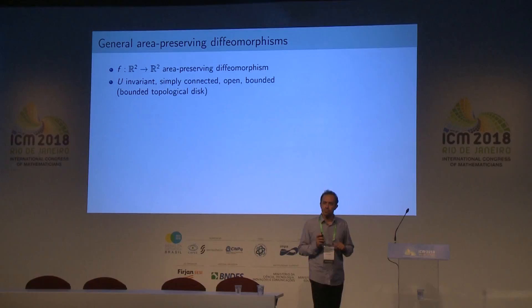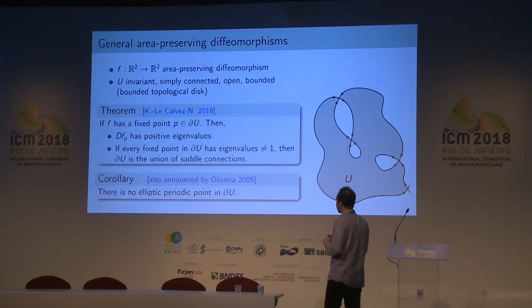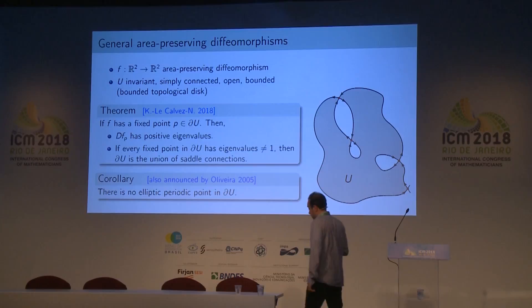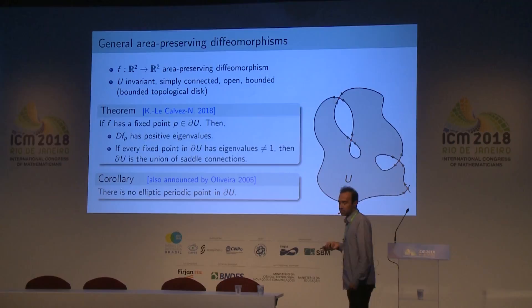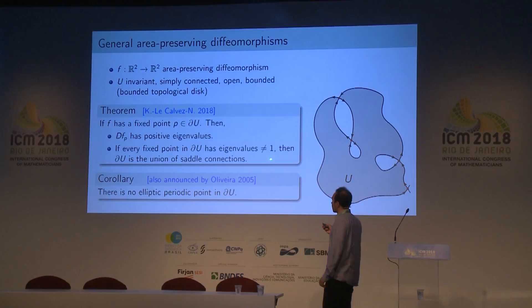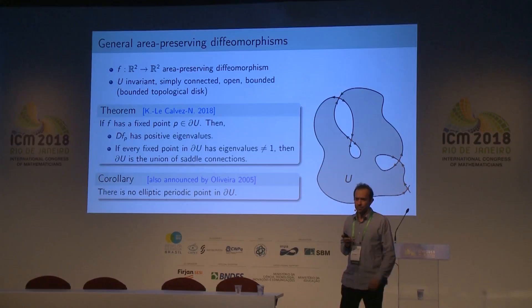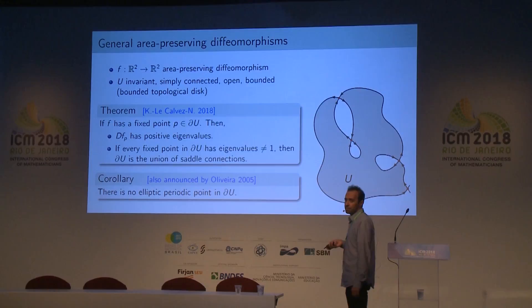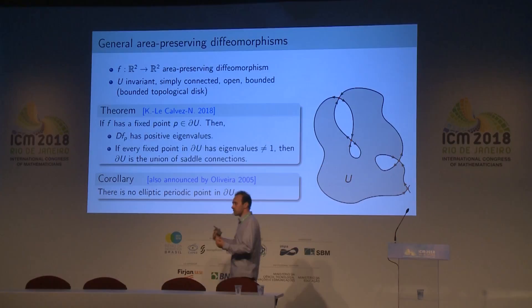Here is a result: if there is a fixed point on the boundary of a topological disk, then the derivative of that fixed point must have a positive eigenvalue — it cannot be an elliptic point. Furthermore, if the periodic points on the boundary always have eigenvalue different from one — meaning no degenerate condition of eigenvalue one — then the boundary must be a finite collection of saddle connections, giving a very strong topological restriction.